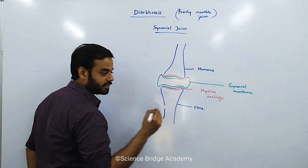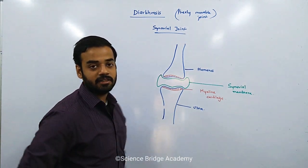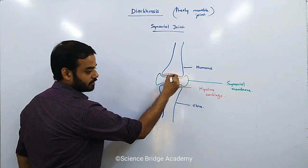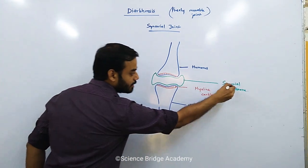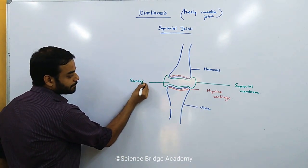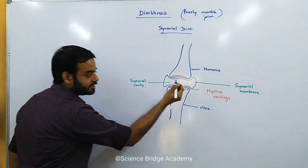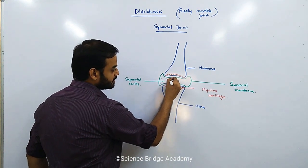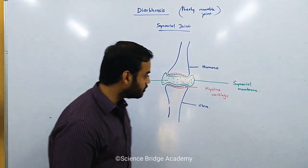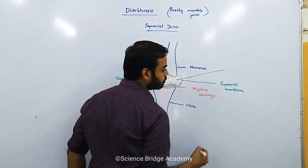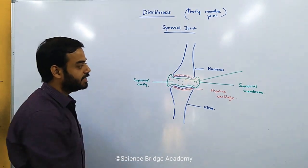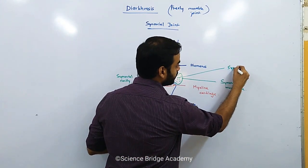The cavity between the bones is called the synovial cavity. The cells of the synovial membrane secrete a fluid or liquid that fills this cavity. That liquid is called synovial fluid. So, most parts are named after the joint itself: synovial membrane, synovial cavity, synovial fluid — all named synovial.